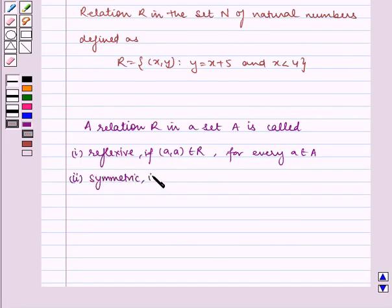Symmetric if (a₁, a₂) belongs to R, which implies (a₂, a₁) belongs to R, for all a₁, a₂ belongs to A.